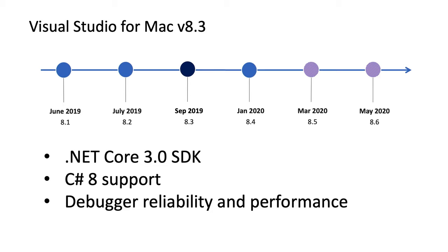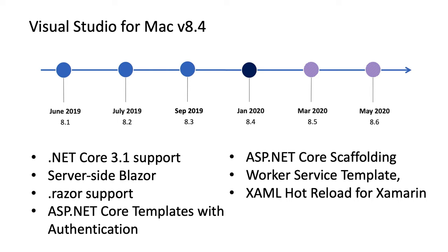It also makes it much easier for us to support compatibility and interoperability with colleagues using Visual Studio for Windows. If they're using the latest C# 8 language features, those are going to be able to work in the Visual Studio for Mac environment. We also really improved the debugger reliability and performance in that release. 8.4 was probably the biggest release we've done — it introduced support for .NET Core 3.1, support for server-side Blazor as well as .razor files, and we also supported ASP.NET project templates with authentication out of the box.